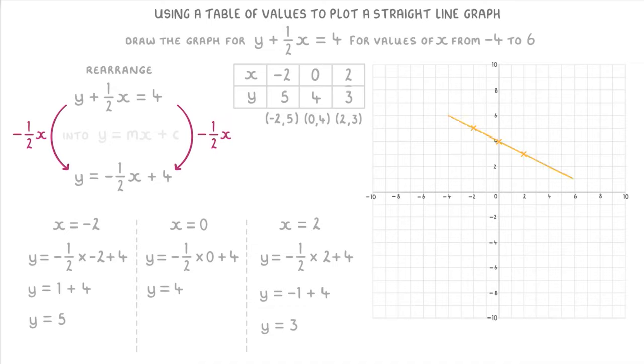And then all that's left is to join them all up with a straight line. And make sure our line extends all the way back to x equals minus 4. And all the way forward to 6. Because that's what they asked for in the question. And to finish, we just need to label our line. So put y plus 1 half x equals 4 next to it somewhere.